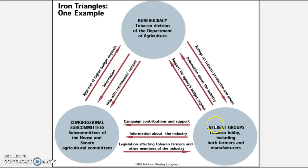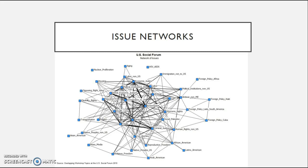Issue networks take a bigger, more modern approach — the idea that there are multiple working groups dealing with a specific issue, rather than just three. Sometimes you see interest groups working with numerous other interest groups, where not one is necessarily dominating. This leans heavily on Federalist No. 10 dealing with factions and the idea of pluralism, that not one particular interest group is dominating.